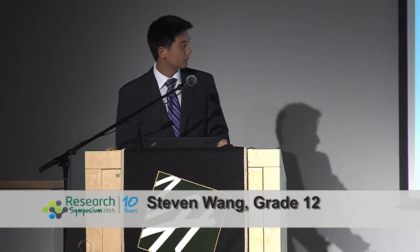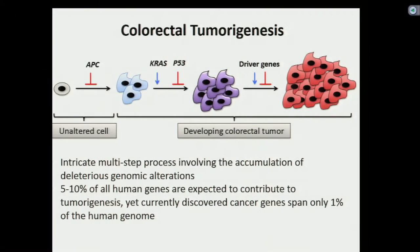My name is Stephen and I'm presenting my project: computer-aided genomic characterization of colorectal cancer driver alterations for oncogenic transformation of primary colon organoids. The main problem in current cancer discovery is finding out how to combat colorectal tumor genesis, which is essentially the creation of new tumors in the colon or rectal region, and is usually developed through the accumulation of deleterious mutations on a genomic level.